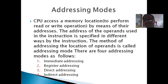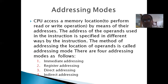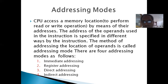The address of the operands used in an instruction is specified in different ways by the instruction. The method of addressing the location of an operand is called the addressing mode. When we are performing an operation on an operand, we need the addresses of the operands — that is, where the values are stored and what values are stored — so we have to reach that value by its address. The method of addressing the location of an operand is called the addressing mode.